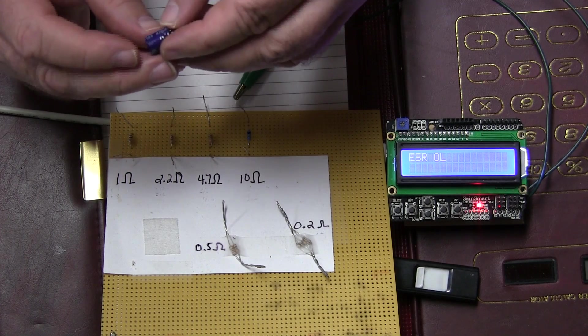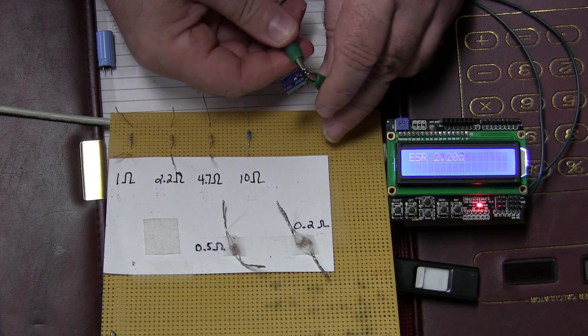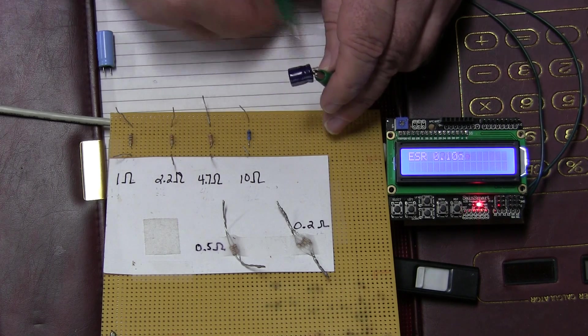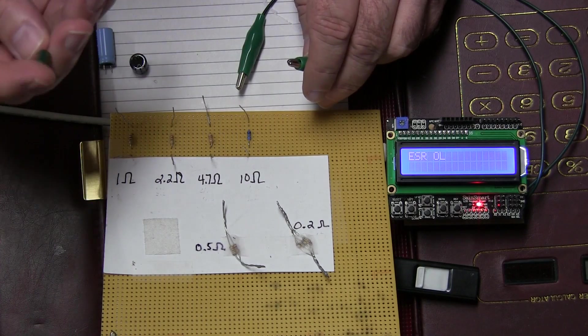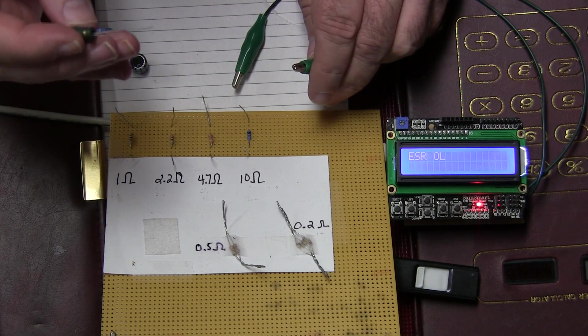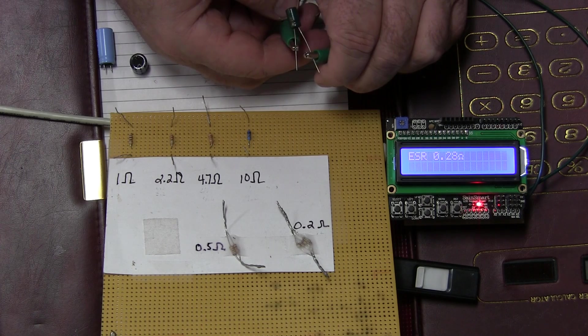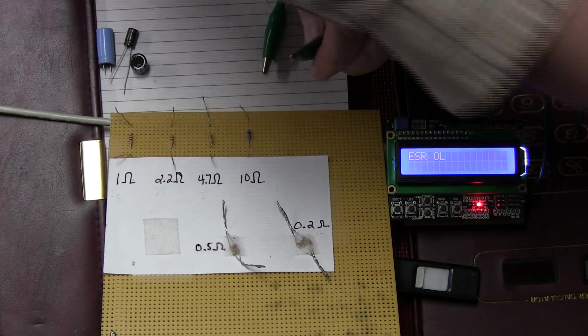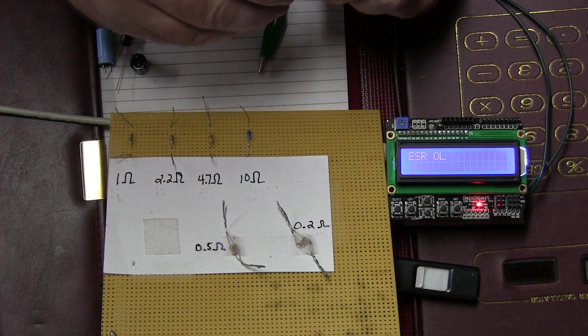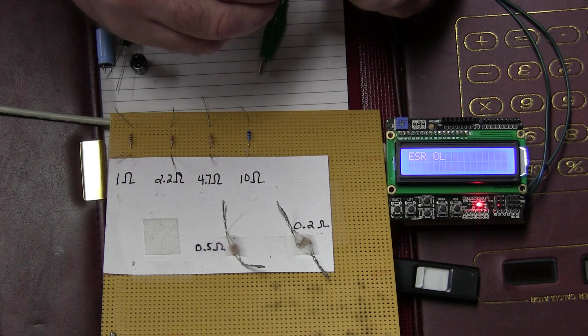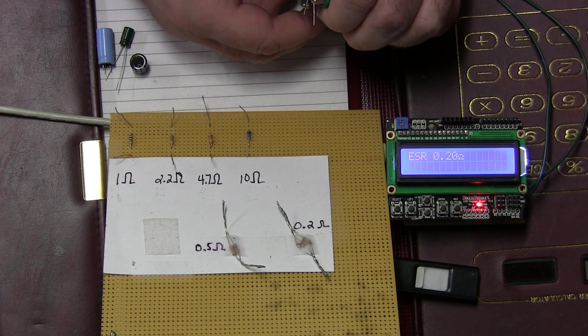This is a 470 mic, 16 volt cap. It's measuring 0.1 ohm, 0.08. This is a 220 mic, 10 volt cap. It's measuring 0.28. This is a 330 mic, 6.3 volt cap. It's measuring 0.2 ohms. 330, 16 volt cap. Measuring 0.27. So all these are good caps.